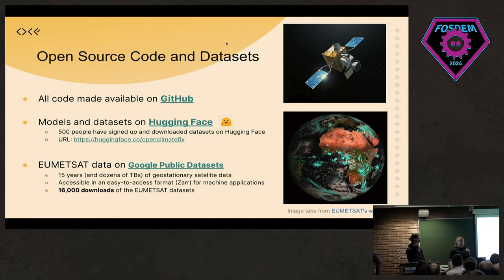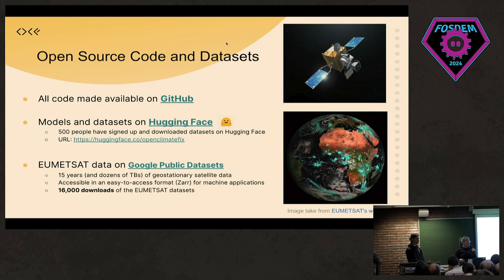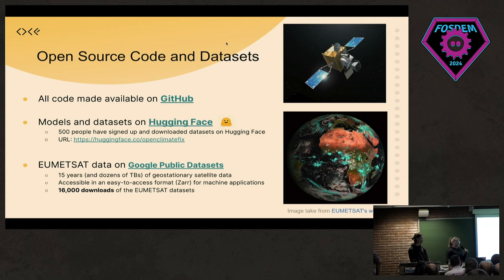We also make available the EU Metsat data we collect — we're connected to a live satellite service while generating our forecasts. We put that data into the Zarr file format and make it available to ML researchers. That data has been downloaded 16,000 times from the Google public datasets site. It's also been used to forecast rain in Sweden, storm evolution in Taiwan, and most recently there was a graduate paper published on day-ahead PV forecasting.